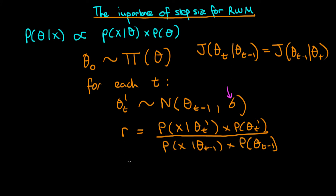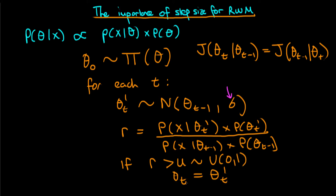Dependent on this ratio r, we decide whether to accept our new proposed value theta t or to reject it and stay where we were. If r is greater than u, where u is a uniformly distributed number between zero and one, then our new value of theta t becomes theta t primed. Otherwise, theta t stays as it was previously.